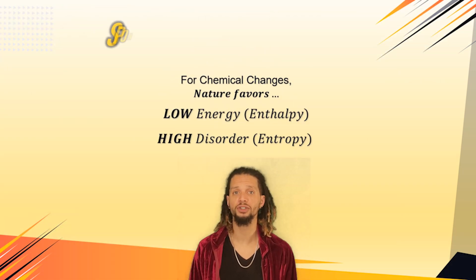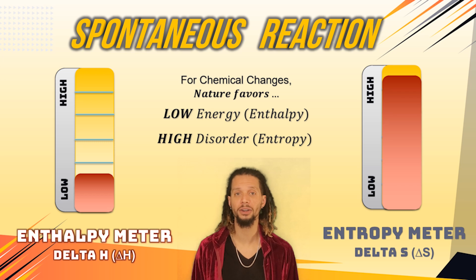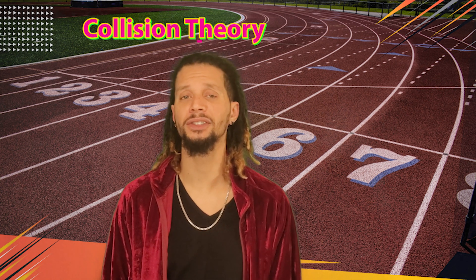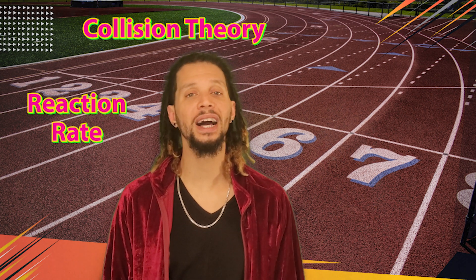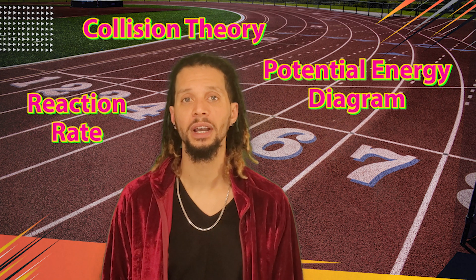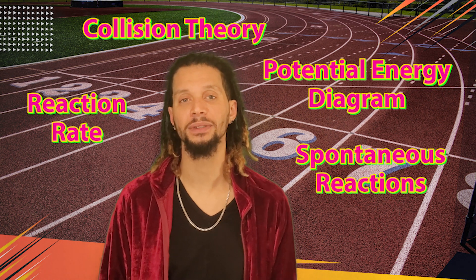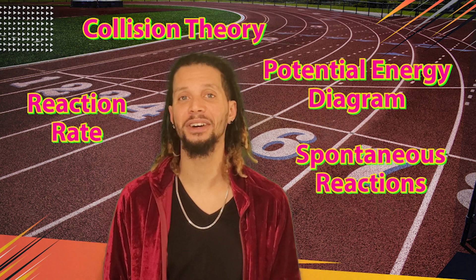For a chemical change where matter is rearranged and something new is made, the reaction is considered spontaneous and will occur if the heat of the reaction — that enthalpy we just discussed — decreases and the entropy of the change increases. Now that you know how our chemical athletes come together to begin the Olympic Games via the collision theory, what affects their speed which we call the rate of reaction, how they utilize energy shown in potential energy diagrams, and how we know if they will even compete via spontaneous reactions, try out these practice problems and then take a nice long break for the intermission of the Chemical Olympics.